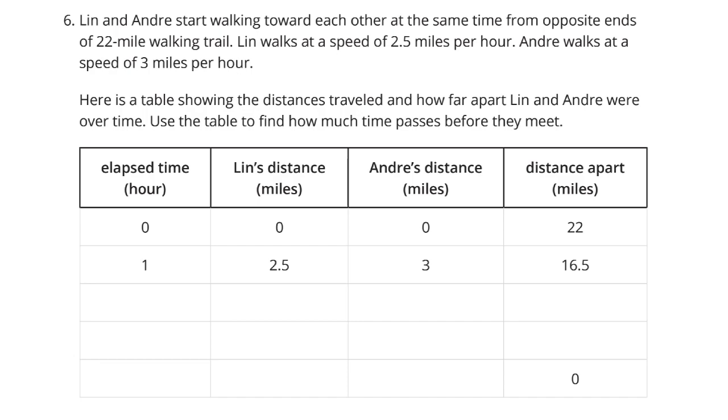Let's take a look at hour number 2 now, since we already have hour 0 and 1 completed. In hour 2, Lynn's gone another 2.5 miles to take this to 5 miles. Andre's gone another 3 miles to take this to 6 miles. They have a total distance of 11. And so if I take the distance apart, 22, and subtract the 11, I end up with 11.